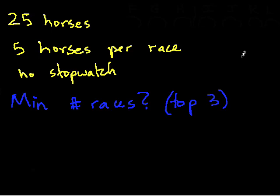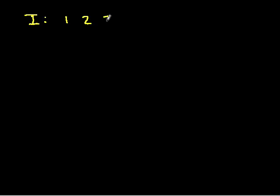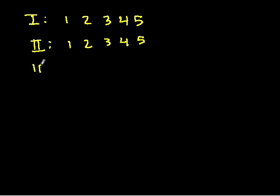Now I'm going to actually solve the problem. To solve this problem, what we're going to do is label and break the horses into groups of five. So let's say we have group one, and we race those five horses. Then we race group two, group three, group four, and then there's the final group — five groups total.